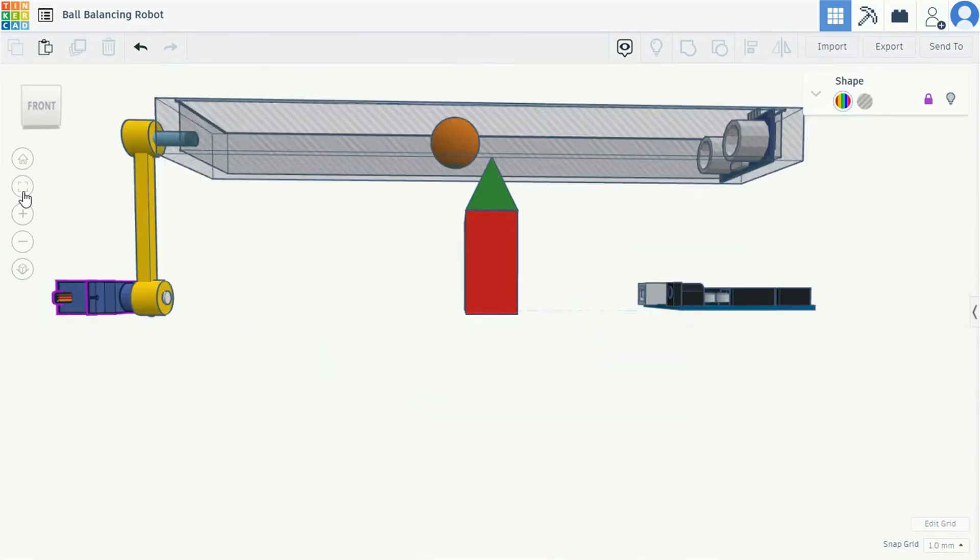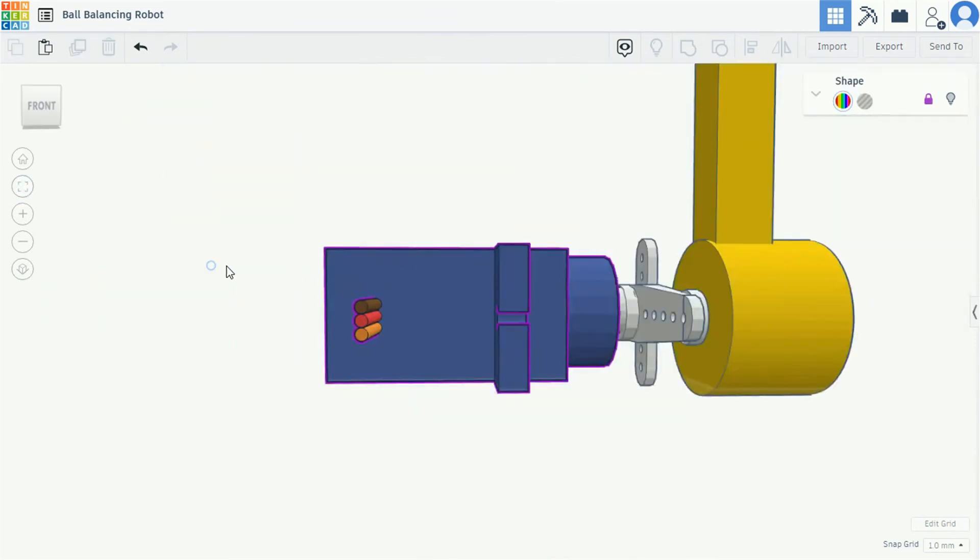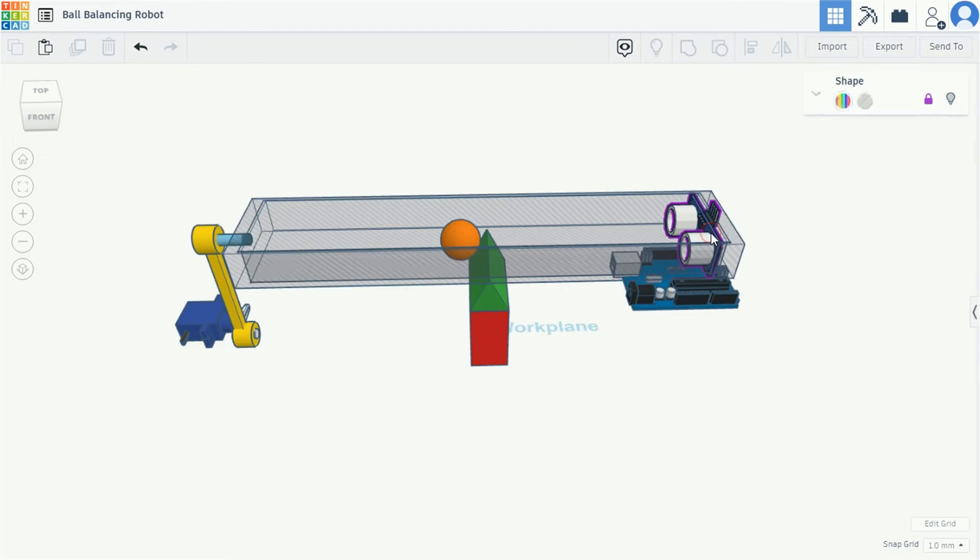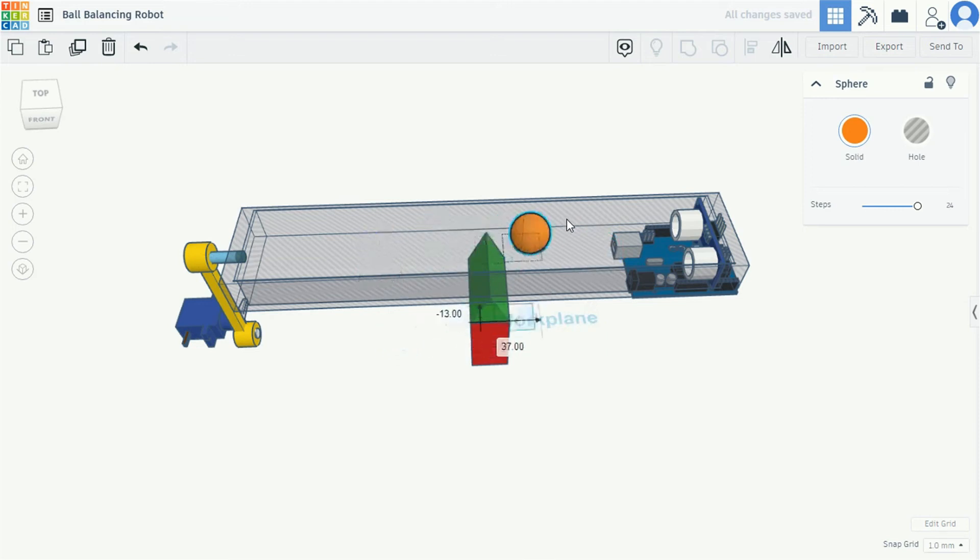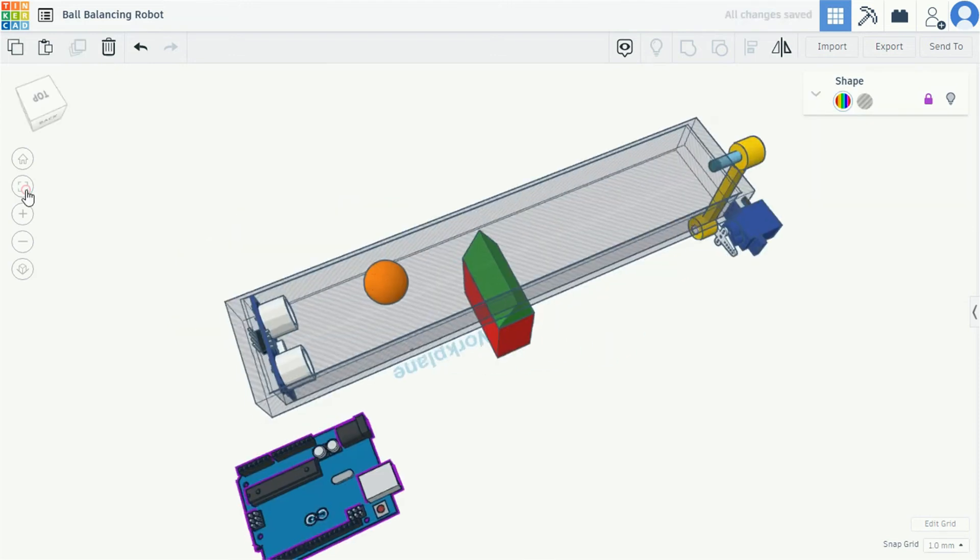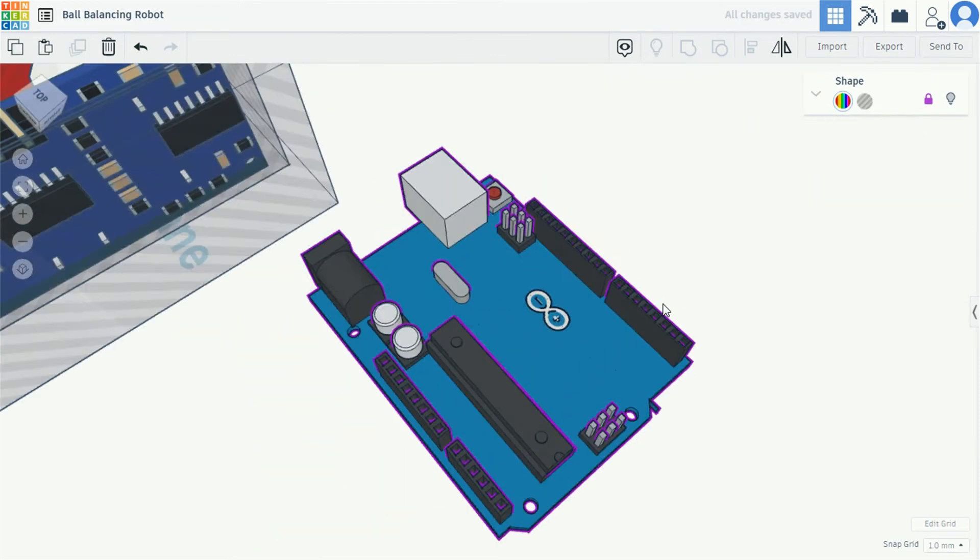To move the box up and down, we have attached a servo motor with the box with the help of a link. There is an ultrasonic sensor placed at the end of the box. This measures the distance of the ball in front of it. This sensor sends the distance to the microcontroller, which sends commands to the servo motor to move the box up or down.